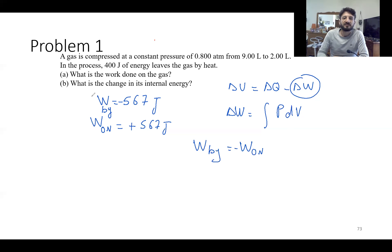The second point: what is the change in its internal energy? You know delta U equals delta Q minus the omega. Delta Q is negative because we release the quantity of heat, equals minus 400 joules.